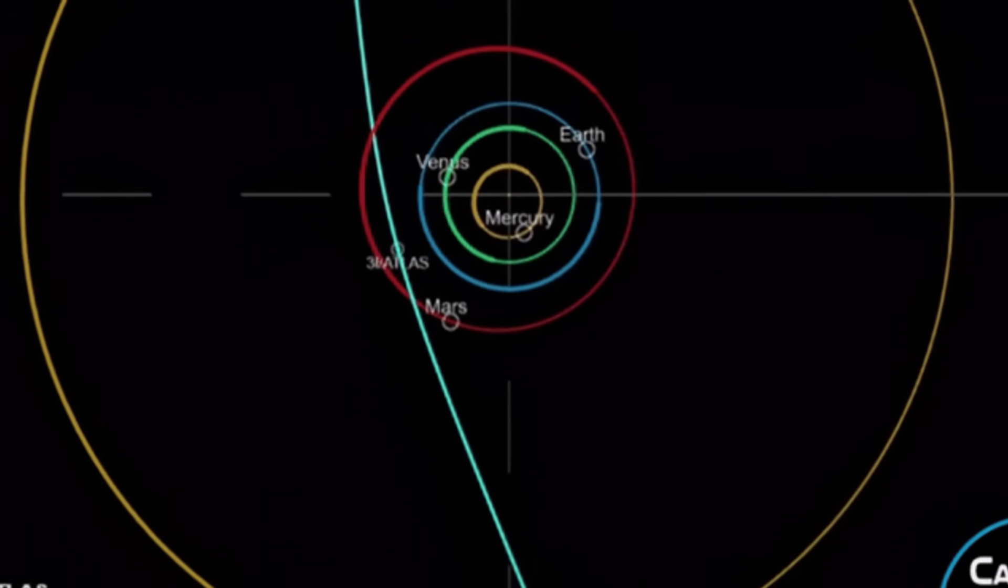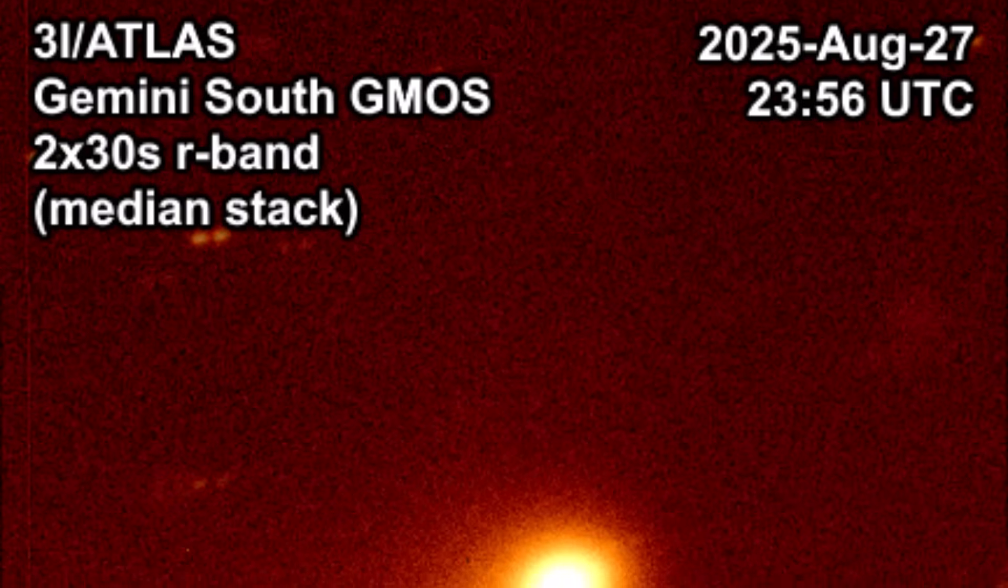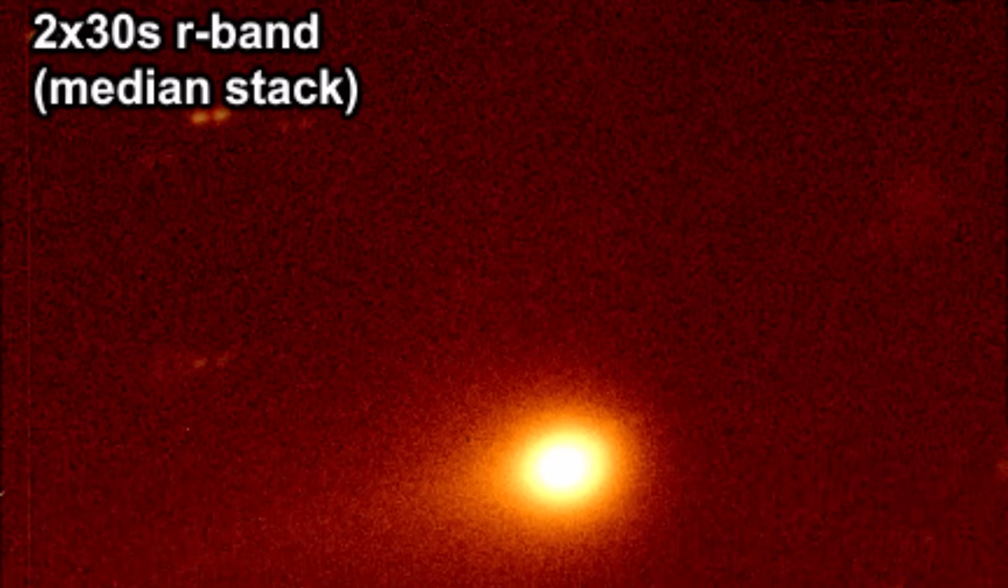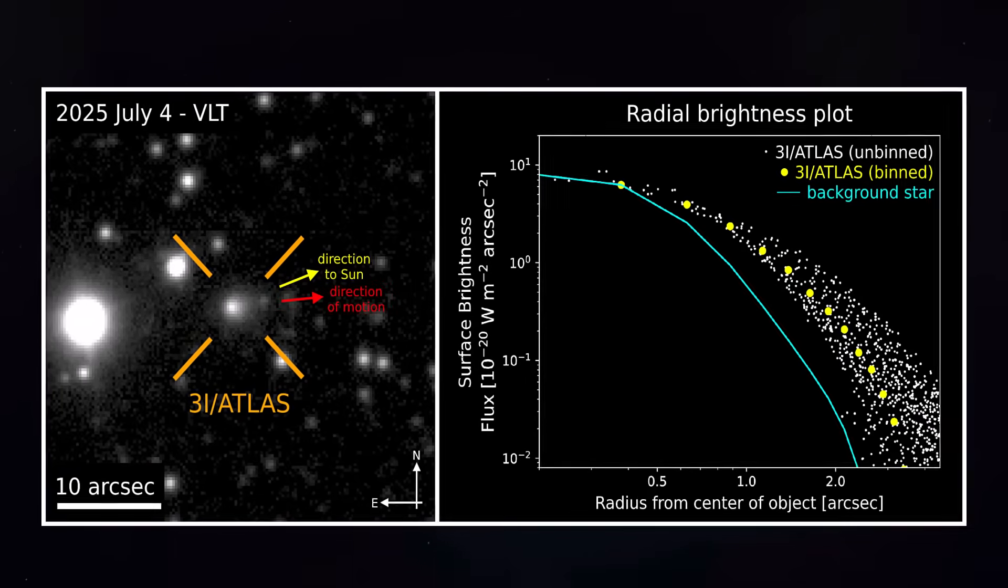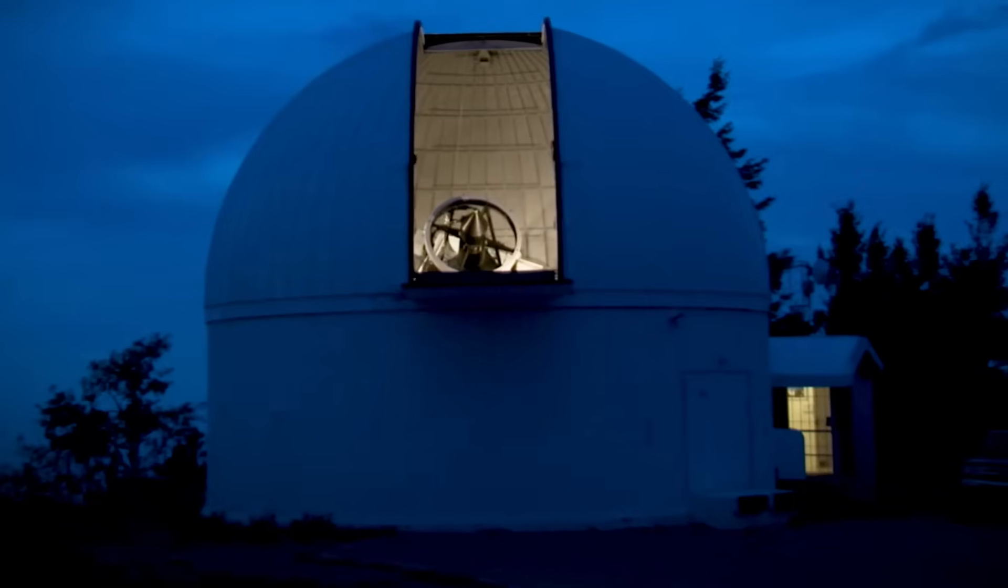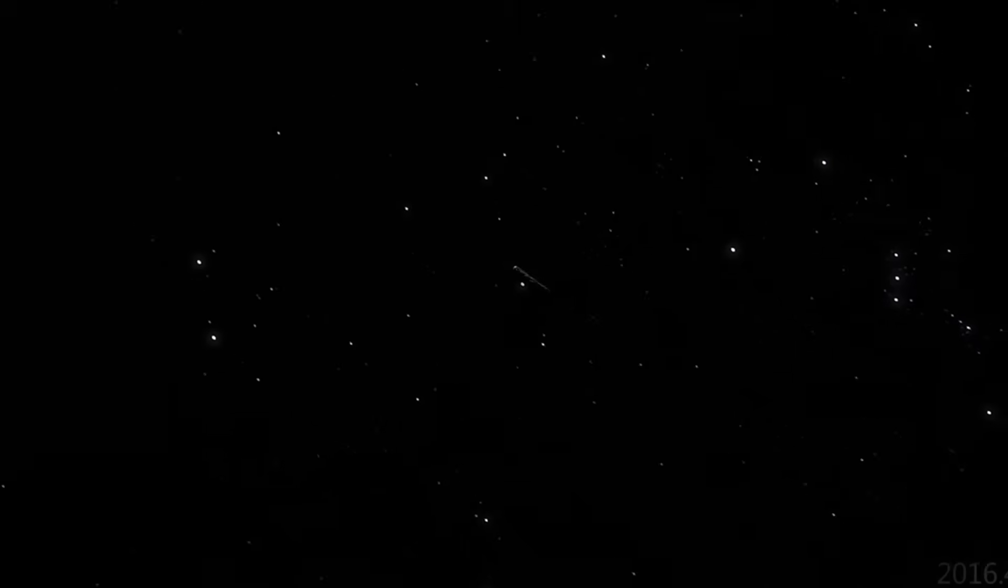It's a flight path that seems deliberately chosen to interact with and observe multiple planets in our system. Which begs the question, what is it looking for? This trajectory, this grand tour, has led some scientists to a startling hypothesis. The object isn't just passing through. It's conducting a planetary survey. First Mars, then Earth. Later, it will swing past Venus and eventually Jupiter. It's visiting the most interesting worlds in our solar system. This presents an incredible, fleeting opportunity.